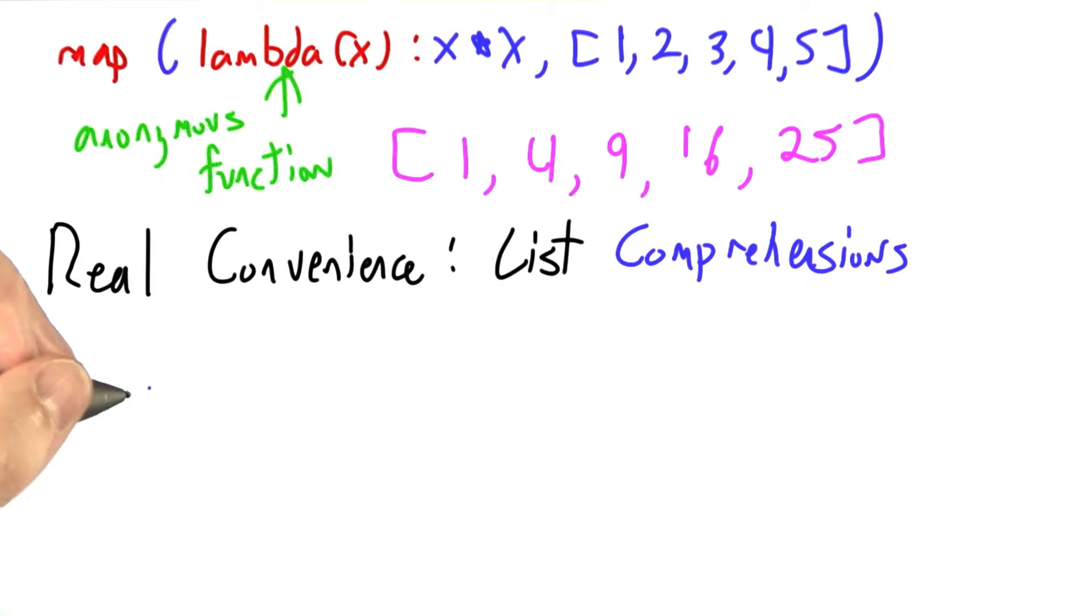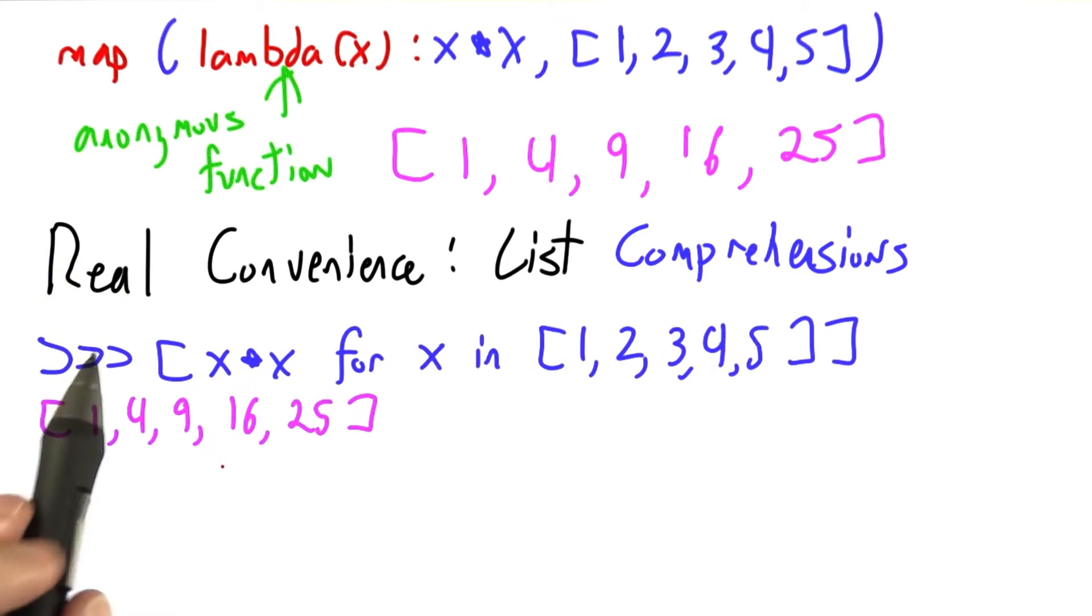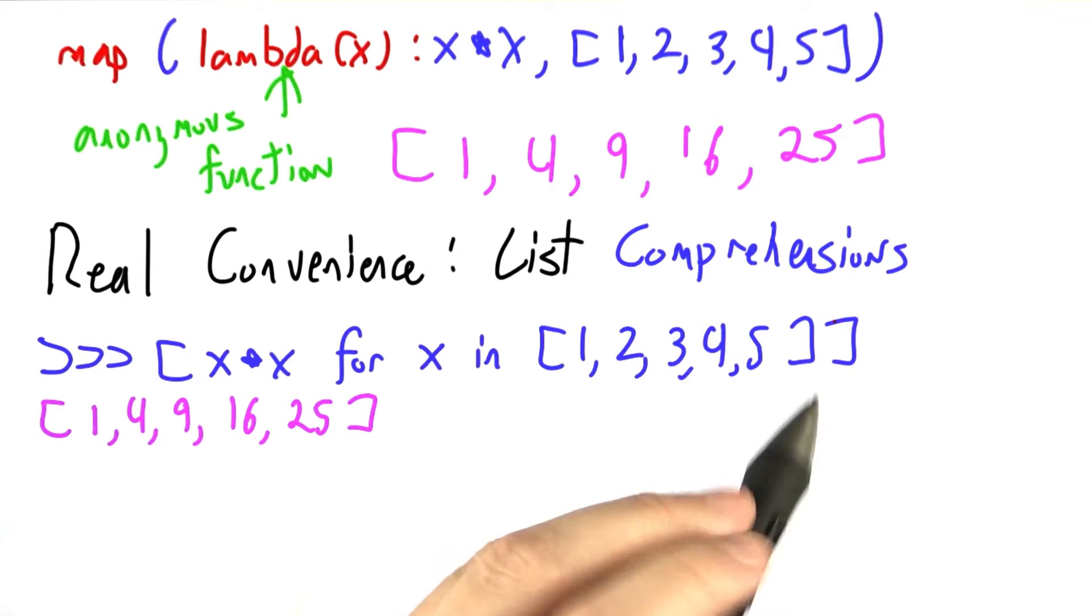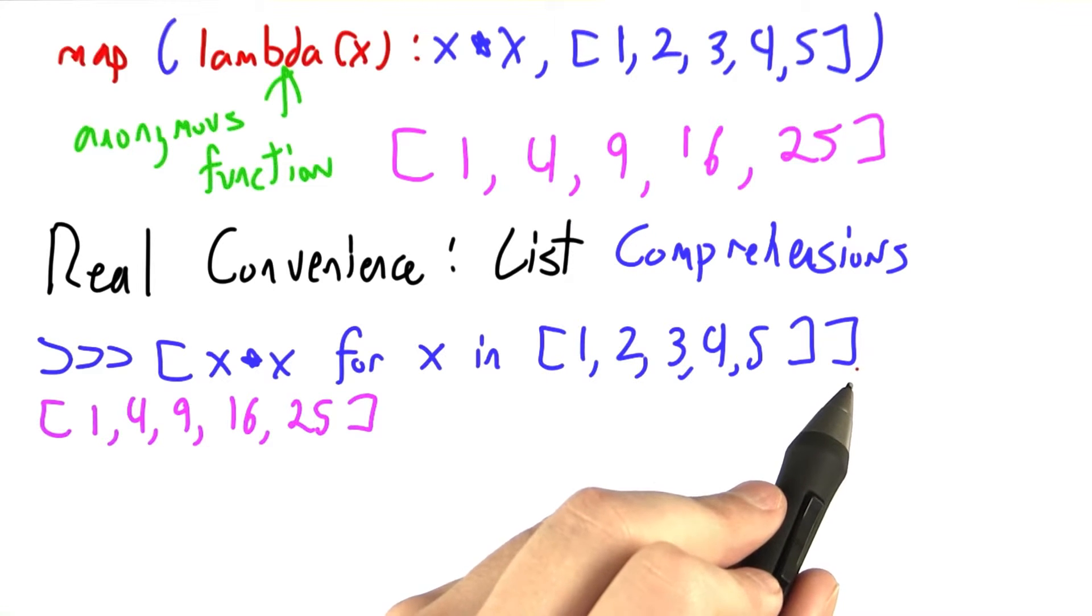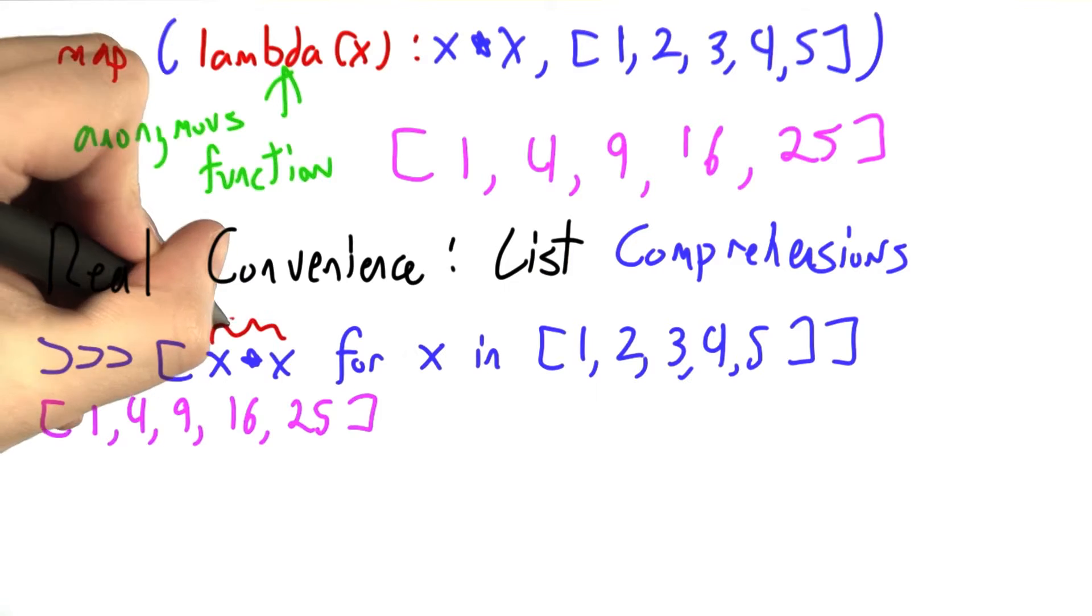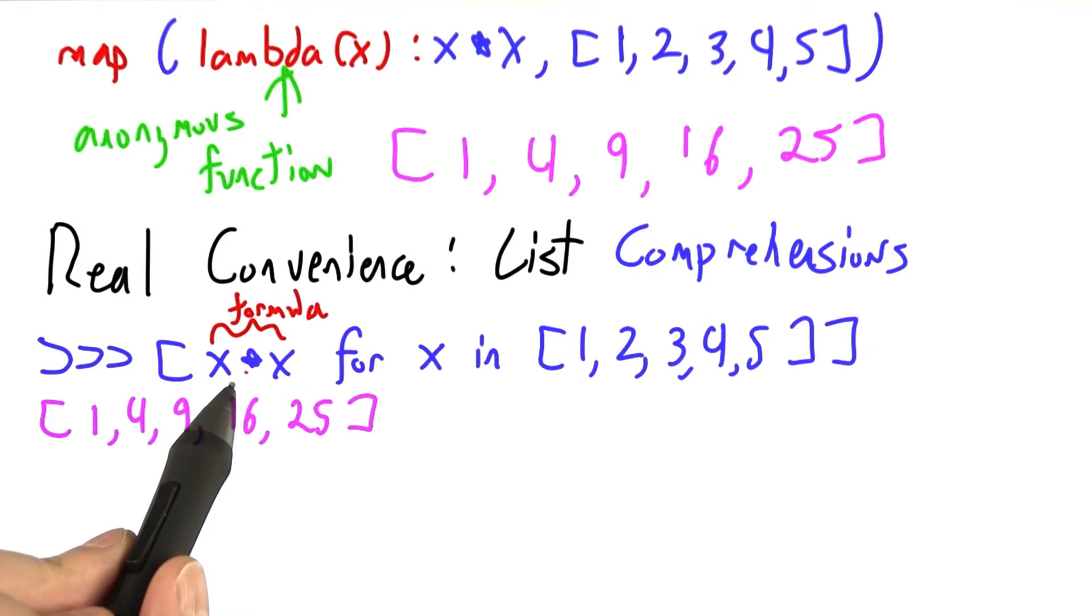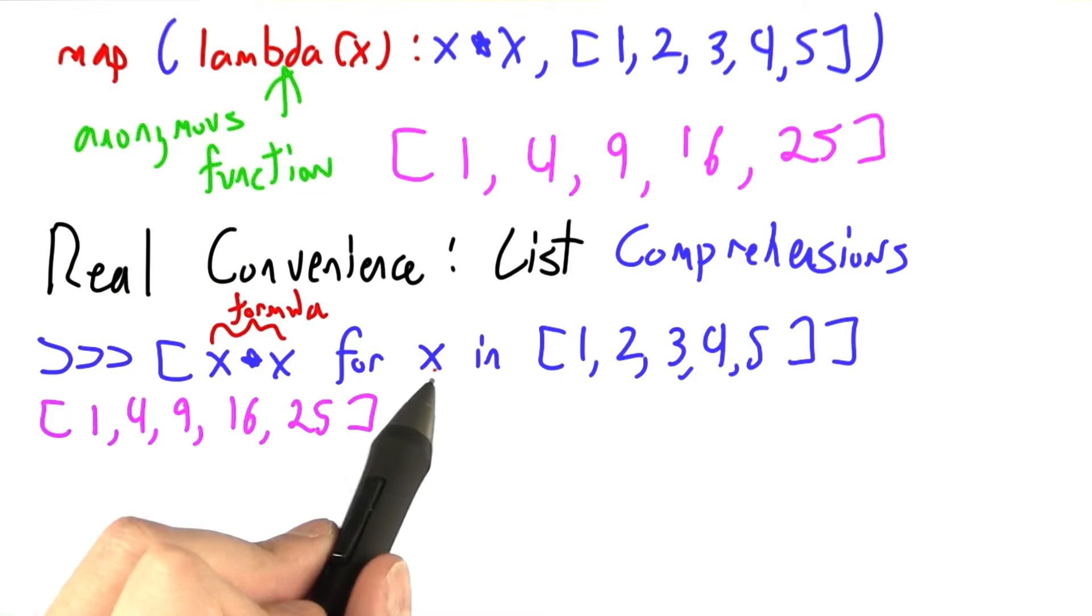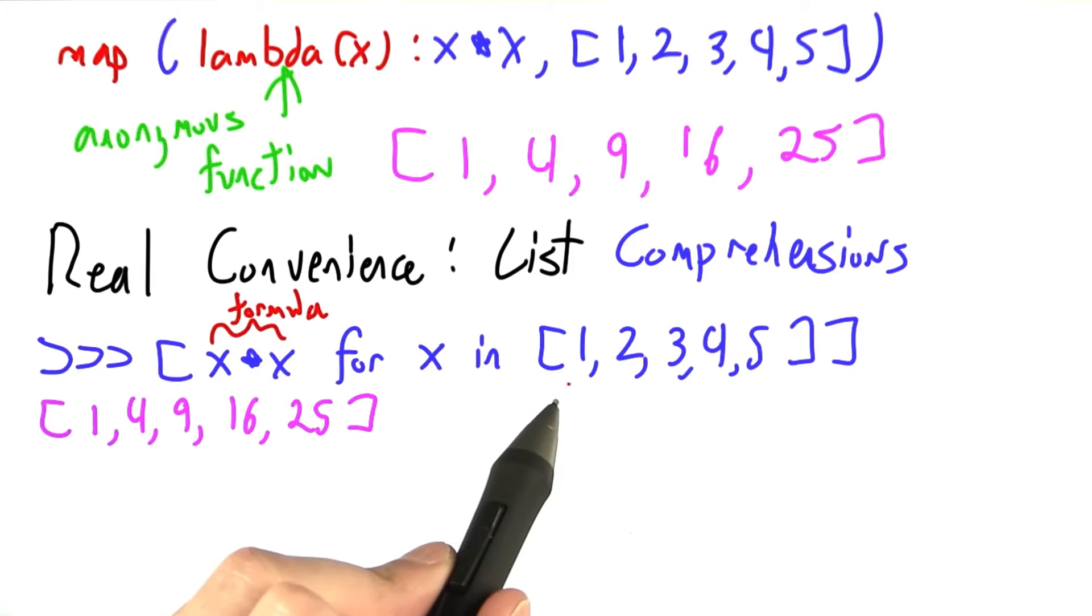But now here comes the real convenience. I'm going to show you a third way to make that list that's even more natural than the previous two. This approach is called a list comprehension. You ask for a list, but instead of actually putting elements in it, you write out a little formula here and then say that you want that formula applied for every element in some other list or collection.